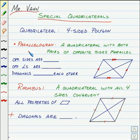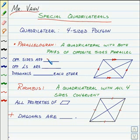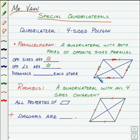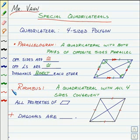First up is a parallelogram. A parallelogram is a quadrilateral with both pairs of opposite sides parallel to each other. This has some other properties as well. We know that opposite sides of a parallelogram are also going to be congruent to each other — those two sides are congruent, and those two sides are congruent. Also, opposite angles will be congruent to each other, so this angle and its opposite are congruent, and these two angles are congruent. We can also say that diagonals bisect each other, so these two sections of this diagonal are congruent, and these two segments of this diagonal are congruent.